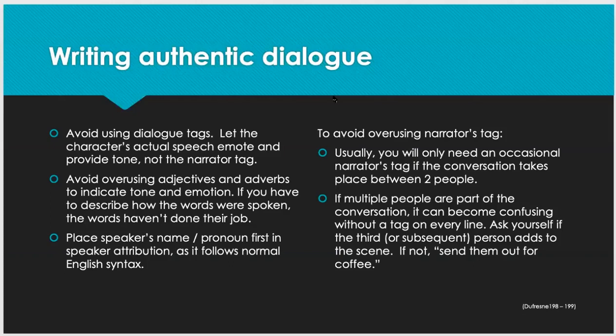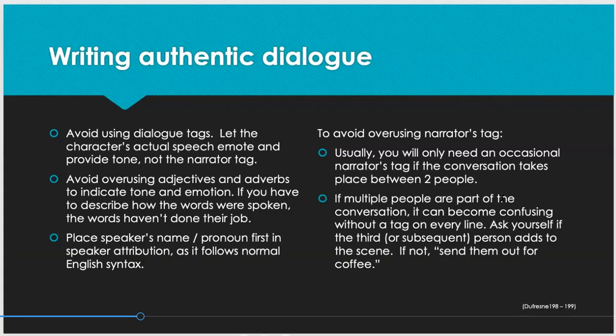You typically want to place the speaker's name or pronoun in the first speaker attribution — so 'he said' or 'Mary said' — because that follows the way we expect English syntax to be arranged. You can avoid overusing narrator tags; you're only going to need them occasionally if your conversation is between two people. Start by establishing who's speaking — for example, 'John said it's a rainy, cold day in Texas.' Then the next person to speak is obviously going to be the second person. As the dialogue goes back and forth, you won't need narrator tags very often — just throw one in often enough so the reader can keep up.